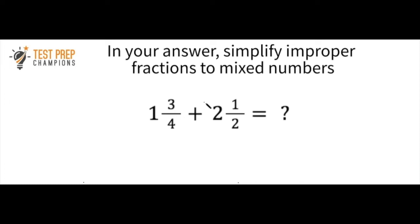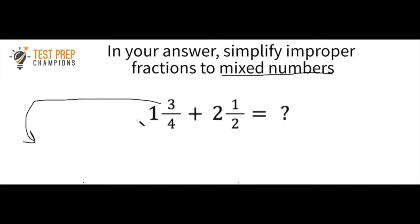Throughout this video we've been working with proper fractions — where the top number is smaller than the bottom number. Now we see two mixed numbers: one and three-fourths plus two and one-half. Mixed numbers have both a whole number and a fraction. We want to convert them to improper fractions. For one and three-fourths: the denominator stays four. We do four times one equals four, then add the numerator three, giving us seven. So the improper fraction is seven over four.